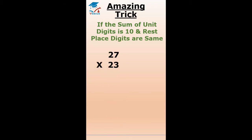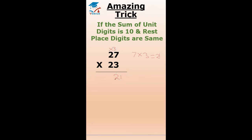27 times 23. Multiply the unit digits: 7 into 3 is equal to 21. Write 21 here. Then multiply the tens digit to the next number: 2 times 3 is 6. So the answer is 621.